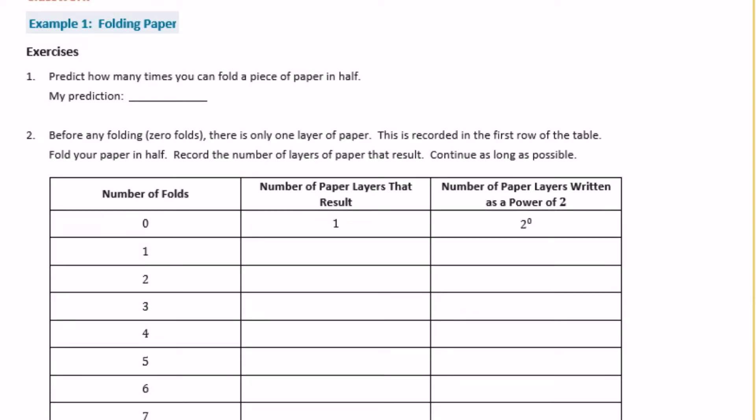Number 1: predict how many times you can fold a piece of paper in half. For this exercise, you're going to need just any regular piece of paper — you can have writing on it, anything you can find. It wants to know how many times you think you could fold it in half until it will be too small or too thick to fold anymore. I'm going to say maybe 10 times.